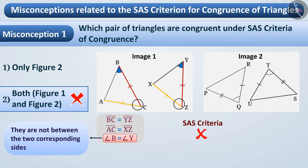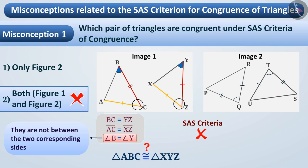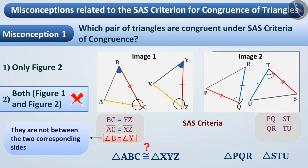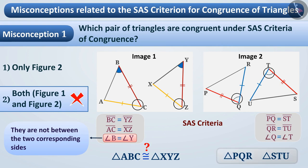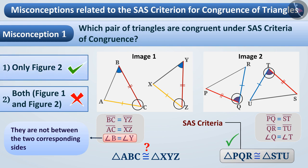Therefore, we cannot say whether the two triangles shown in the first figure are congruent or not. However, the two corresponding sides of the triangles shown in the second figure and the angle between them are equal, so both those triangles are congruent under the SAS criteria. Hence, the correct answer is option 1.